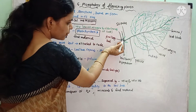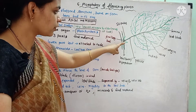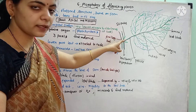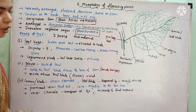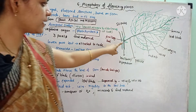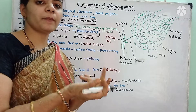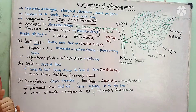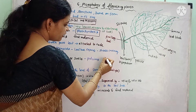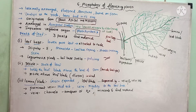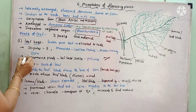At the leaf base, there are two green colored leaf-like structures present which are called stipules. In monocots, the leaf base expands and forms a sheath around the stem, which covers the stem either partially or totally. In some leguminous plants, the leaf base is swollen, and this swollen leaf base is called pulvinus.